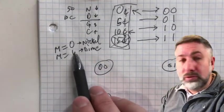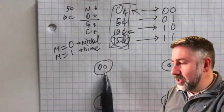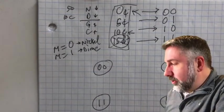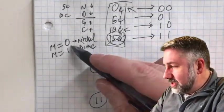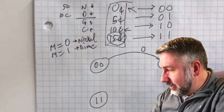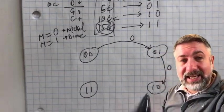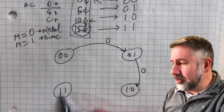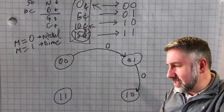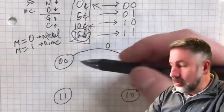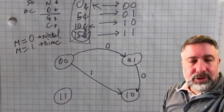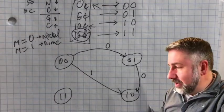With one input, there are two transitions out of each state. If I'm in state zero and get a nickel (M=0) I go to state five cents; if I get a dime (M=1) I go straight to state ten cents. Similarly, if I'm in state five cents and get a nickel I go to state ten cents.